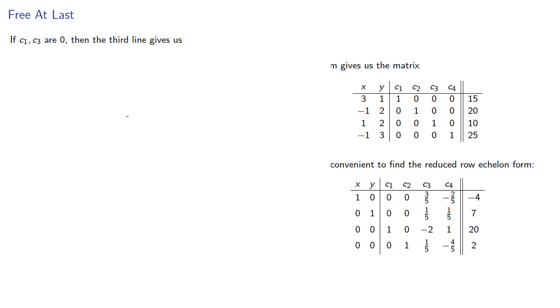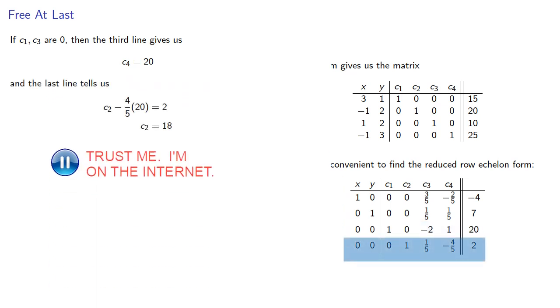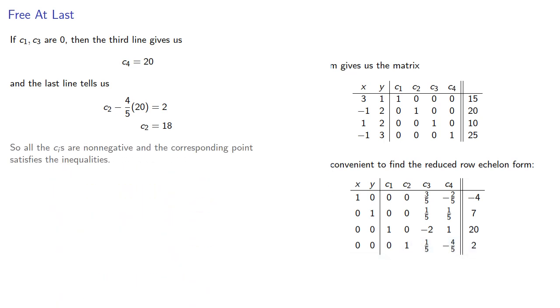If c1 and c3 are zero, then the third line gives us, and the last line tells us, so all the ci's are non-negative, and the corresponding point satisfies the inequalities.